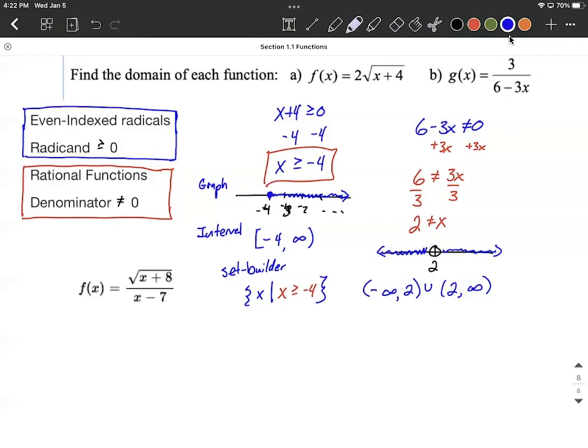Finally, the set builder notation for this is going to be squiggly brackets. The set of values of x such that. And then remember what we do is we take our inequality and cut and paste it here after that vertical line.